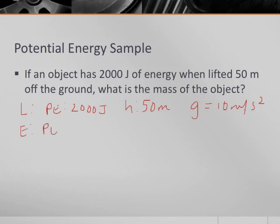If you think about our equation, we have PE equals MGH, but we want to solve for M. So we divide by GH on both sides. M is equal to PE divided by GH.